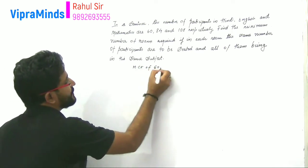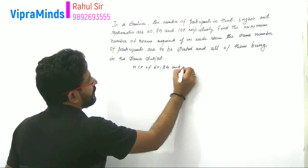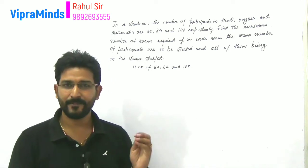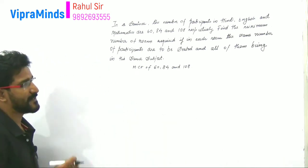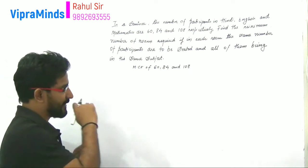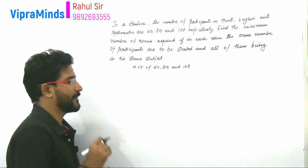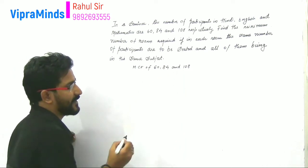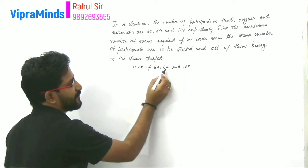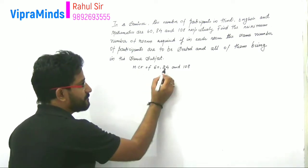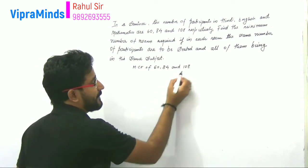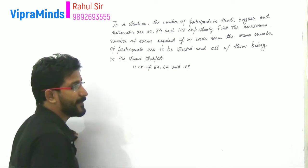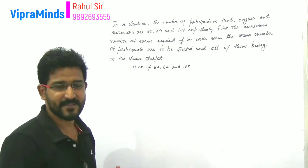We need to find the HCF of 60, 84, and 108. There are different methods already discussed in our videos. The shortcut method: we find the least difference between the numbers. Between 60 and 84 the difference is 24. Between 84 and 108 the difference is again 24. Between 60 and 108 the difference is 48. So the least difference is 24.